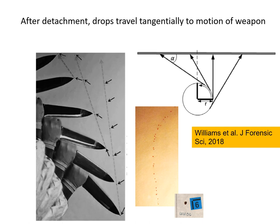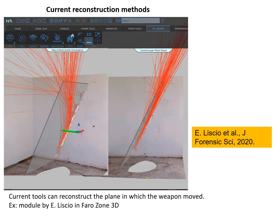Once these drops are released, no more forces apply to them and they move tangentially to the motion of the weapon at the time they were released. That was shown by Williams and Mike Taylor in 2018 — they did really nice videos. The fact that drops move tangentially to the weapon, if you have a rotary motion, translates into a linear pattern of stains on the wall. But they don't need to be linear — if you do more complex motion like with a samurai sword, you're going to see these lines bend in one direction or the other.